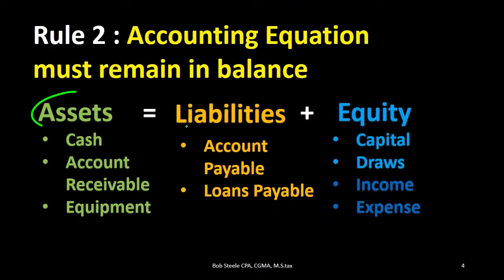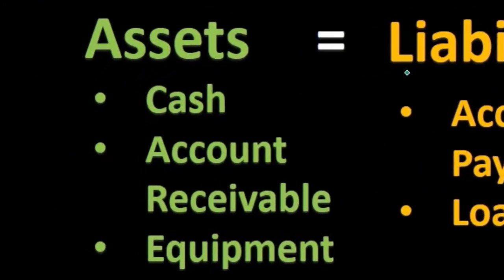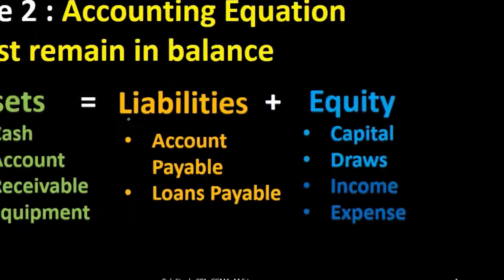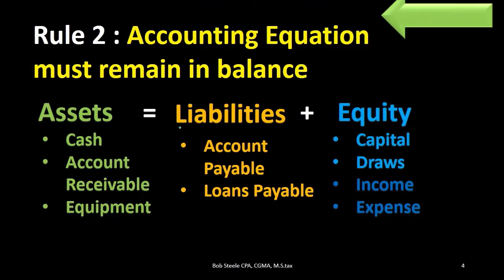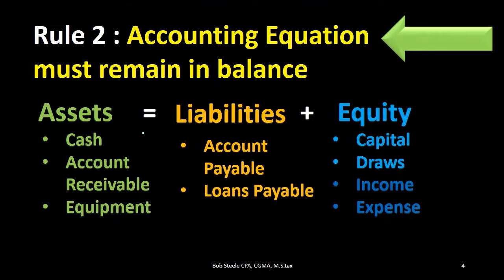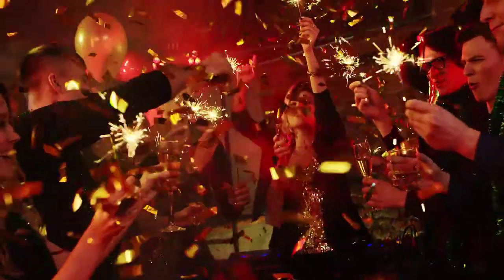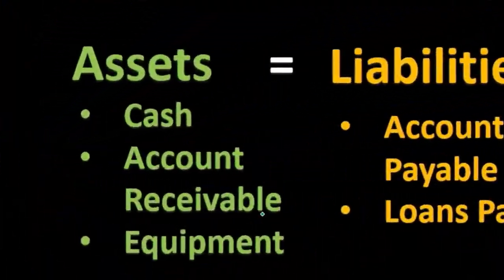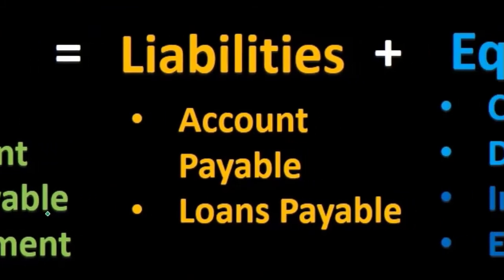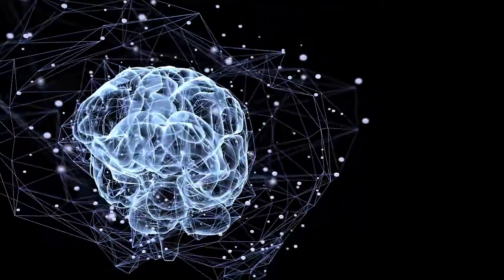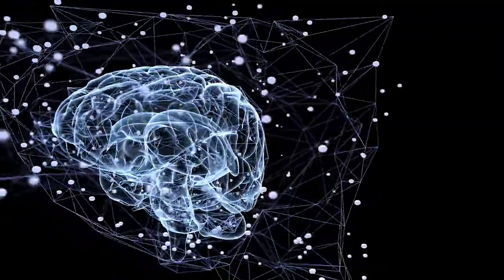Rule two: the accounting equation must remain in balance after every transaction. The accounting equation is assets equal liabilities plus equity, and we need to record transactions in such a way that this equation remains in balance. That is one reason we need at least two accounts affected — if only one account were affected, we would be out of balance. We need at least two things happening in order for a transaction to do something and also remain in balance.